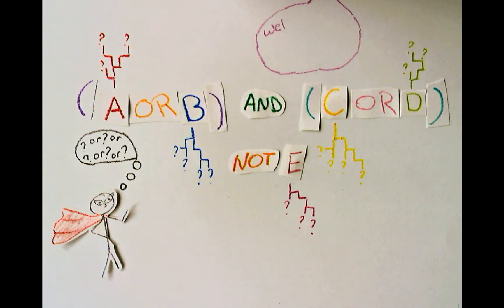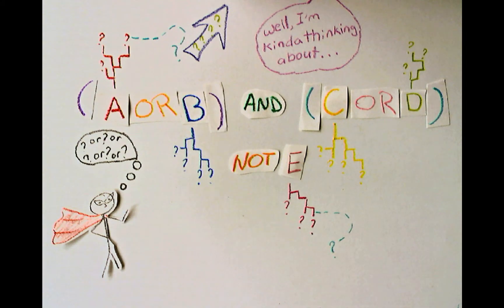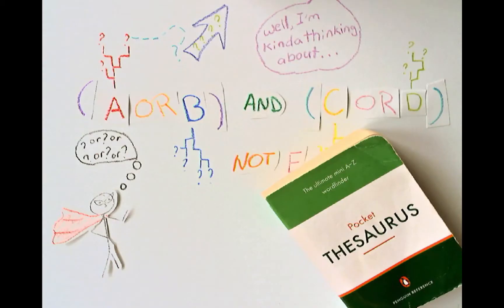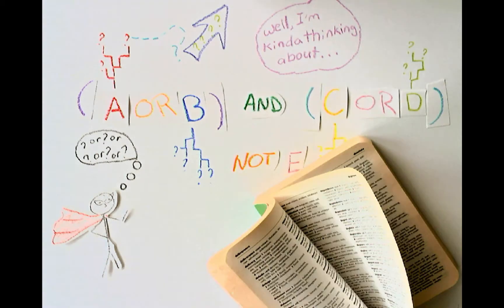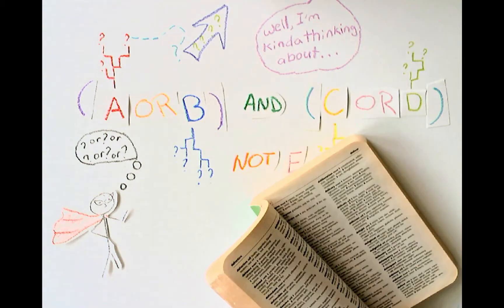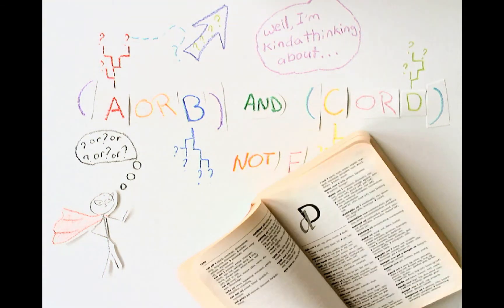Listening to what the user says about their topic during the reference interview is a great way to pick up search terms. So is checking the use and see references in the database's controlled vocabulary. And if the database doesn't have a thesaurus, check the thesaurus for a related database in the same discipline or field of study. Even Roget's thesaurus can be a great source of free text terms, especially for searching newspaper databases that are written in the vernacular for everyday people.